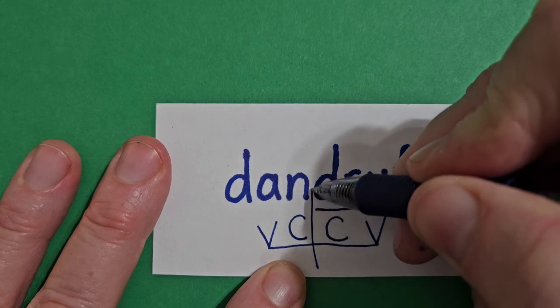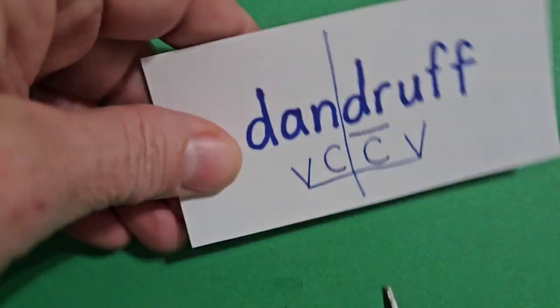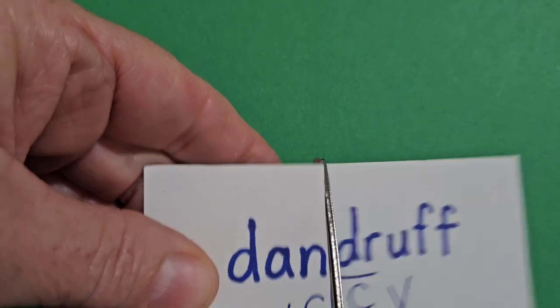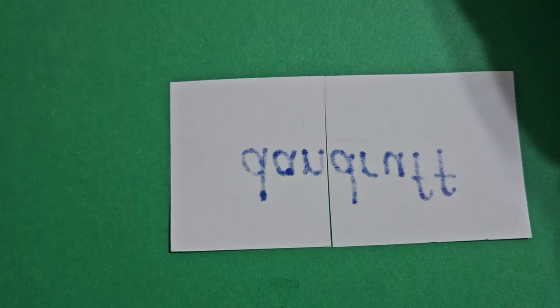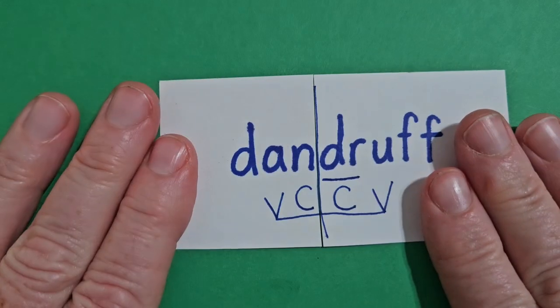So we start from the bottom and draw our line up, get our scissors, cut on the line, flip it, tape it, flip it back.